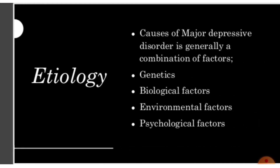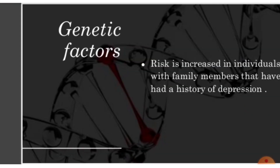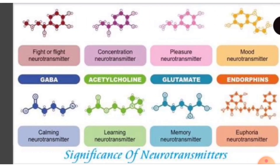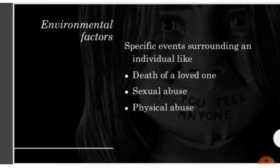The major causes or etiology of major depressive disorder include genetics, biological factors, environmental factors, and psychological factors. For genetic factors, risk increases in individuals with family members who have a history of depression — it can be hereditary, similar to schizophrenia. Biological factors involve neurotransmitters such as GABA, acetylcholine, glutamate, and endorphins, which all play roles in mood and are involved in depression. Environmental factors include specific events like the death of a loved one, sexual abuse, physical abuse, emotional abuse, or trauma — any environmental trigger can result in or trigger a depressive episode.